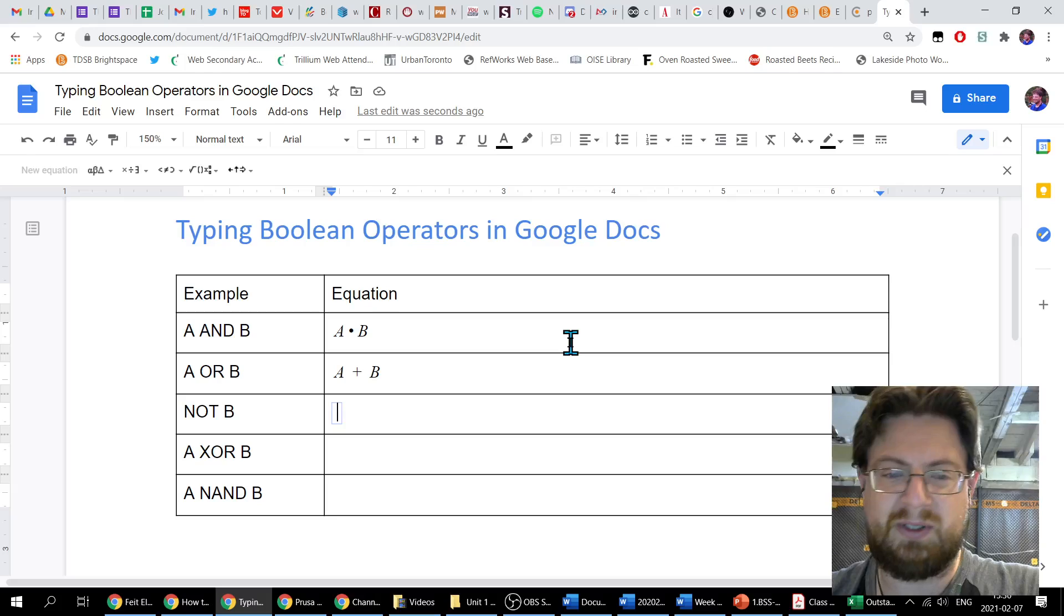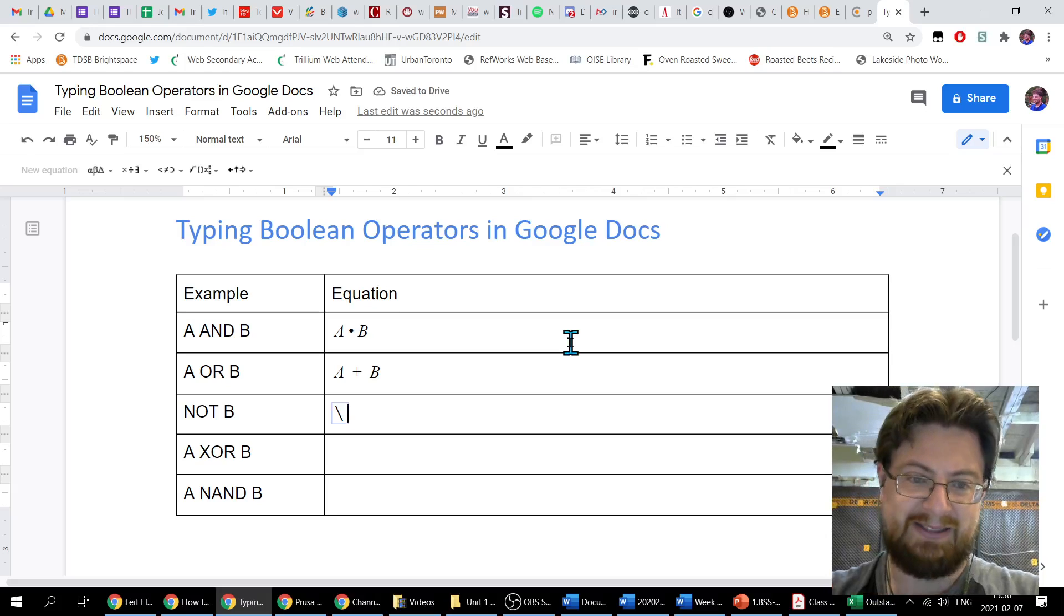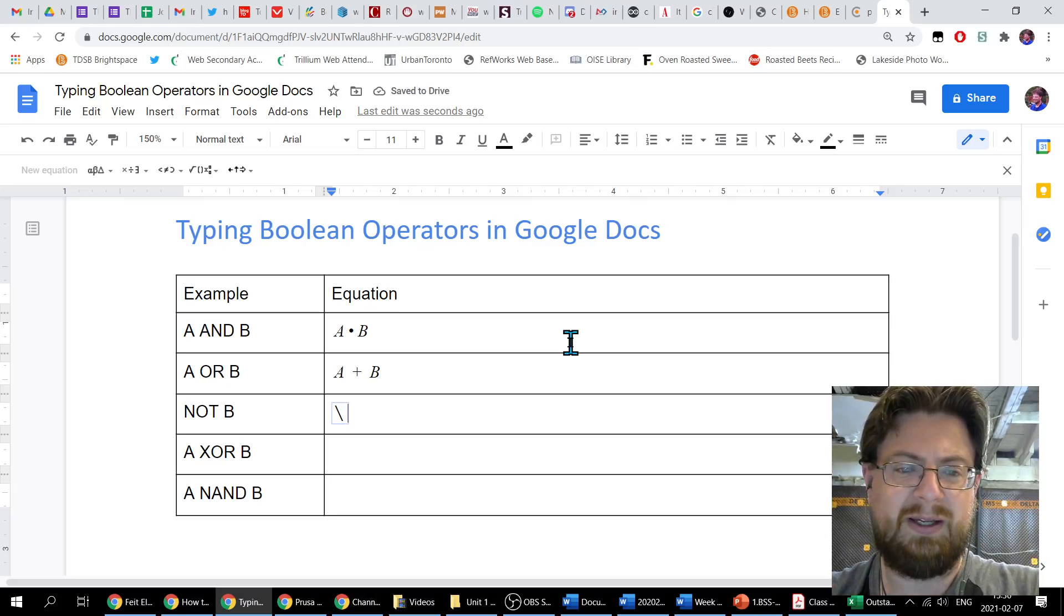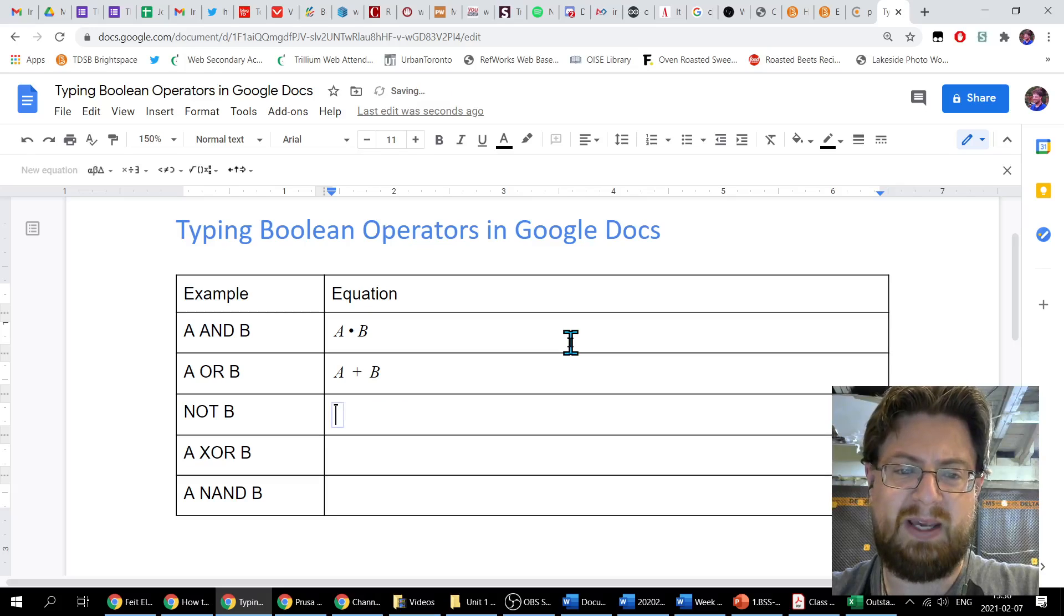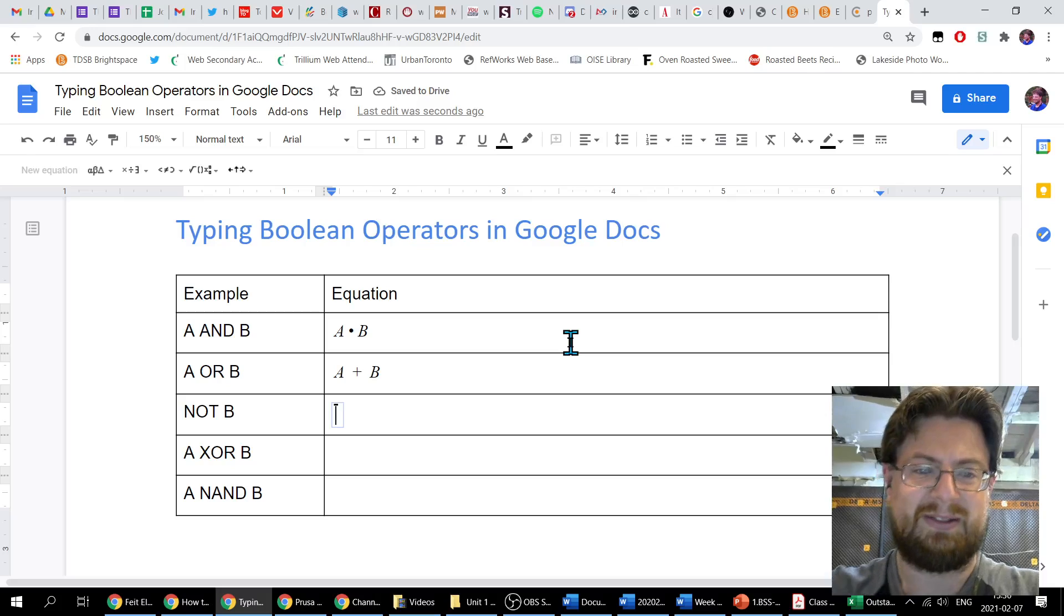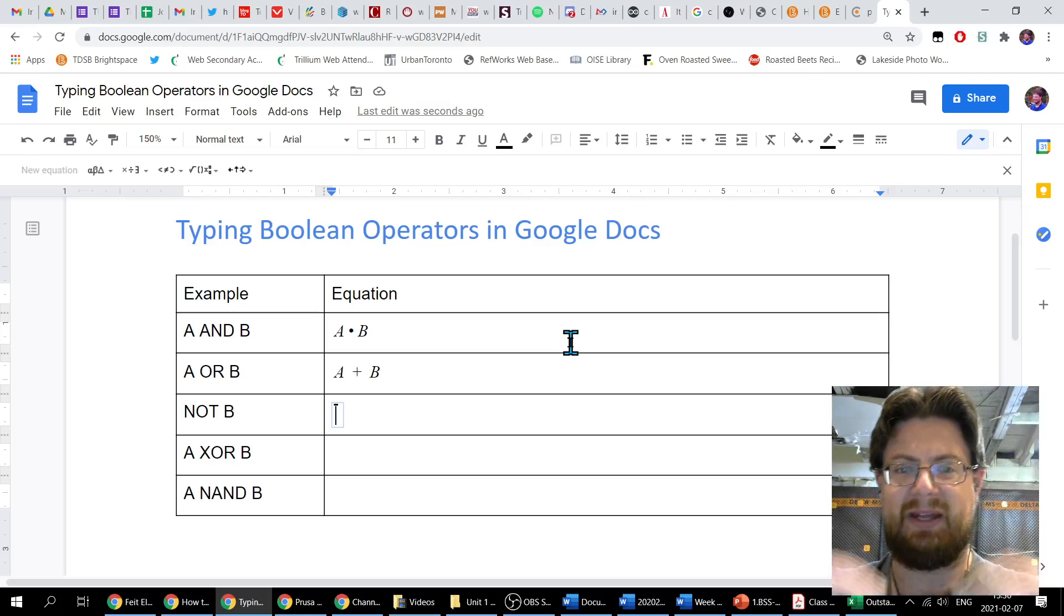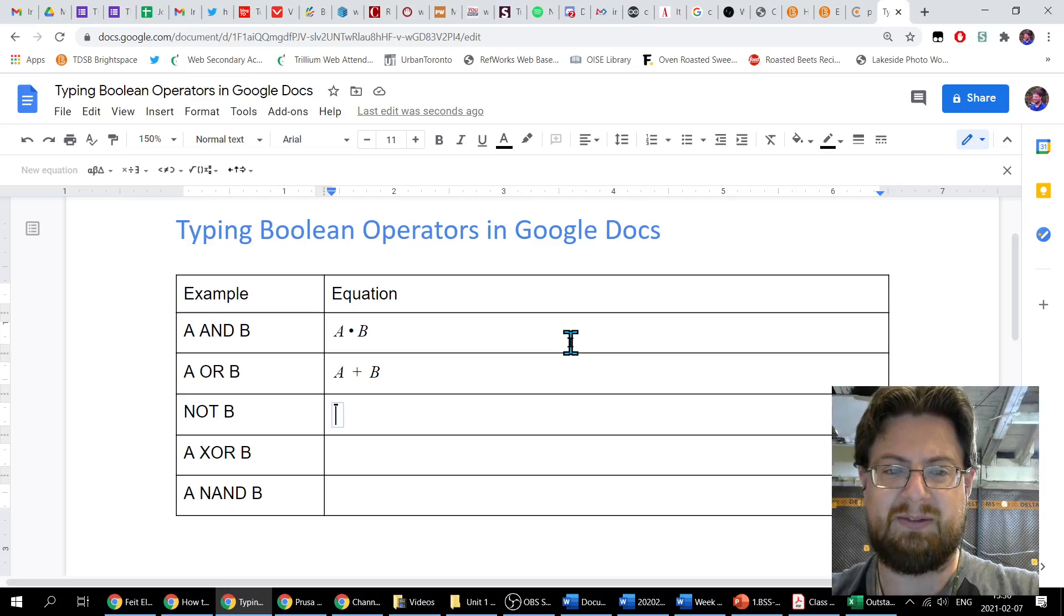If we type backslash - that's that slash, not the one that goes the other way, the backslash - and type overline, hit space. You can see everything just disappeared. I've got a little tiny - if you look carefully, you can see at the top of that cursor there's a little tiny horizontal bar. This is where I can type in my B.